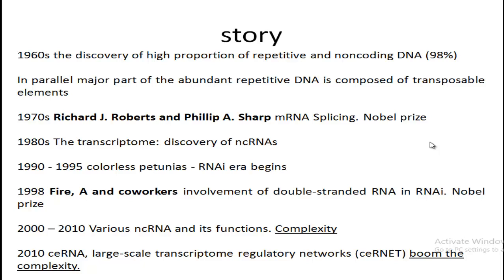Before discussing these directly, let's appreciate a little history behind these discoveries. DNA sequencing reveals that there is a high proportion of repetitive and non-coding DNA in our genome. The major part of the abundant repetitive DNA is composed of transposable elements, which were discovered by Barbara McClintock in the 1970s. An important breakthrough was by Richard Roberts and Phillip Sharp — messenger RNA splicing — for which they got the Nobel Prize. Before that, we thought the whole messenger RNA was used in protein synthesis, but mRNA also has intronic regions that are spliced out.